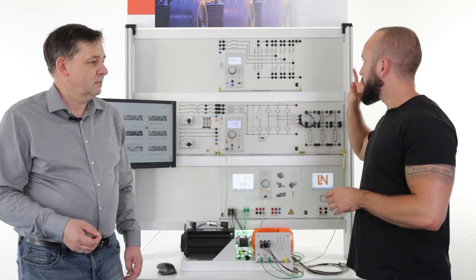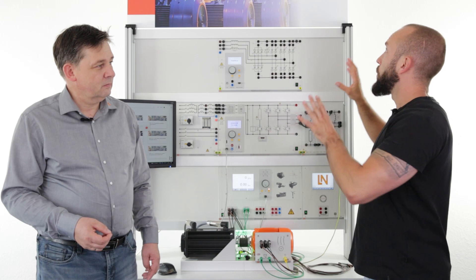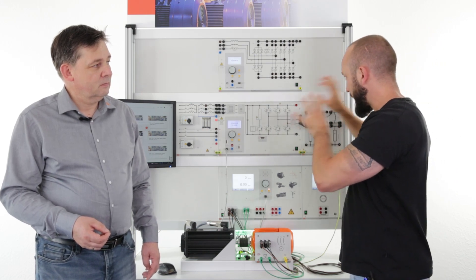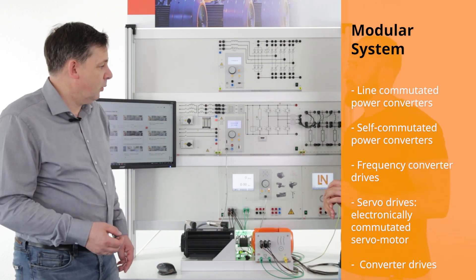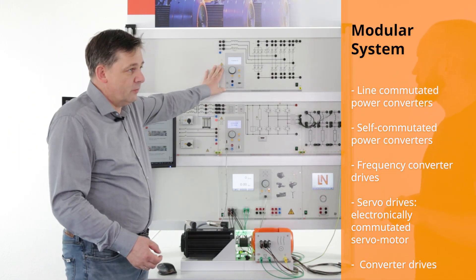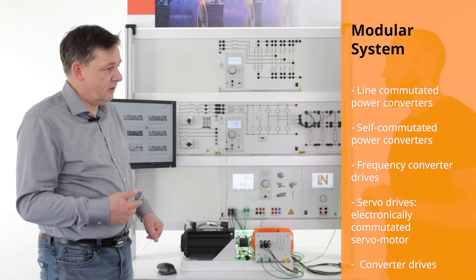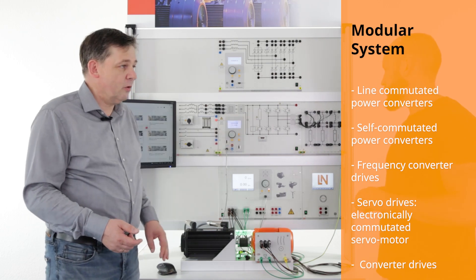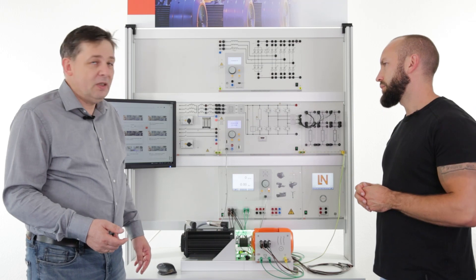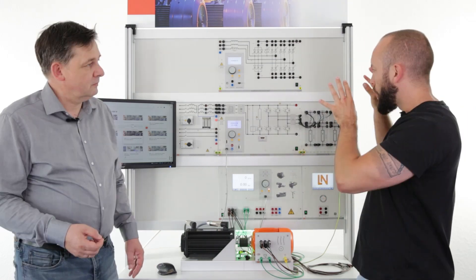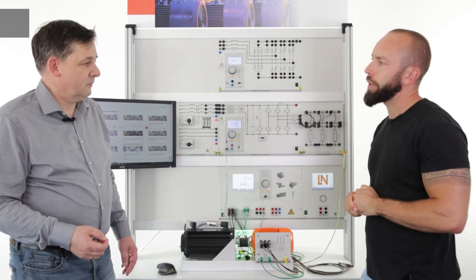What are the topics where we're going to look at when we are taking care of that training system? We split the system in two ways. One way is line commutated converters, where we look at thyristors, diodes, and so on. And then we have the self-commutated converters, which belong to the IGBT. That sounds pretty complex. Who will learn with that system and where will it be used for training or apprenticeship?